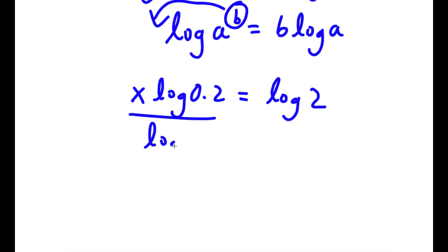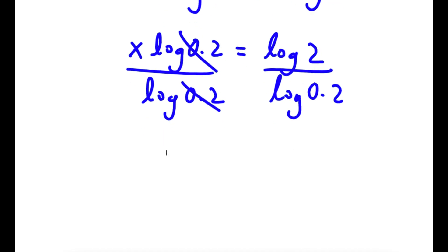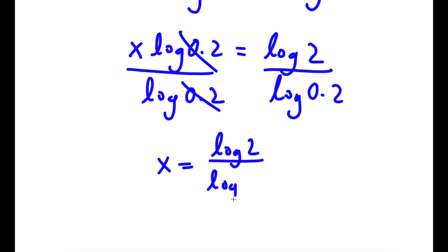If I divide both sides by log 0.2, these two cancel out, and I get x is equal to log 2 over log 0.2.